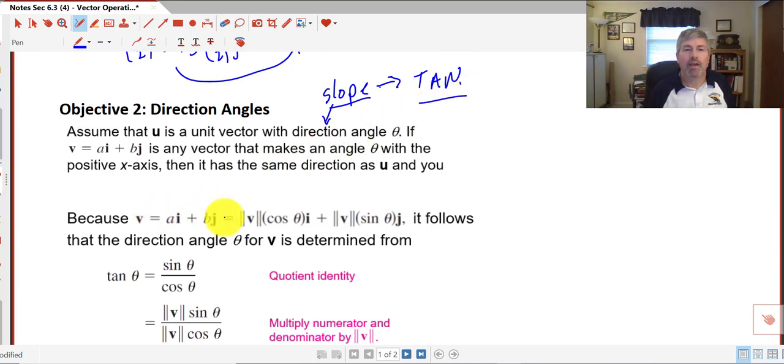Because v equals ai plus bj, and the magnitude of v times the cosine theta i plus the magnitude of v times the sine theta j, which we did in the previous problem. We used a magnitude of 3 there. It follows that the direction angle theta for v is determined from tangent.